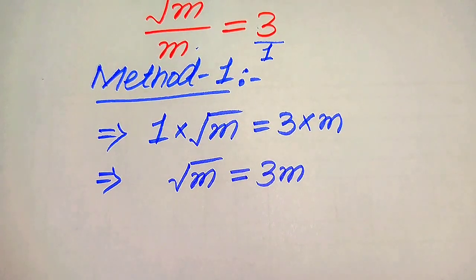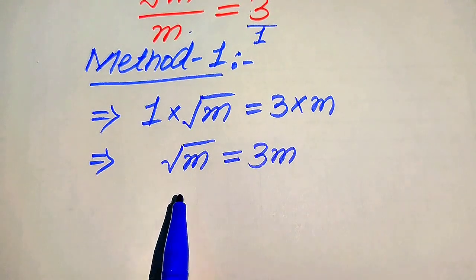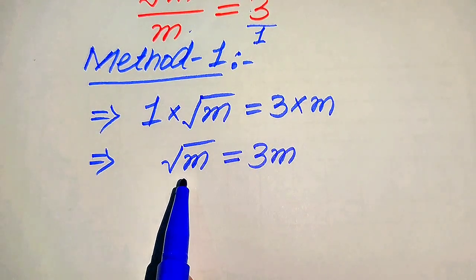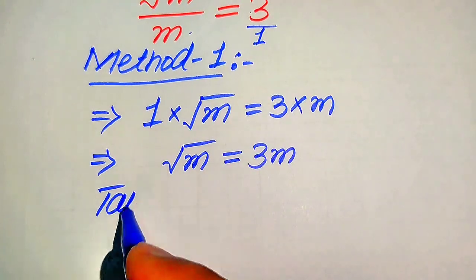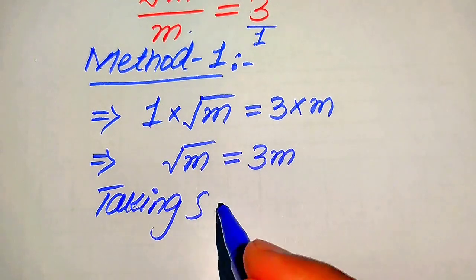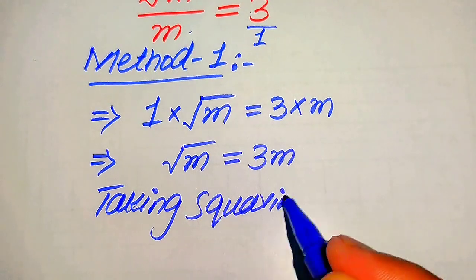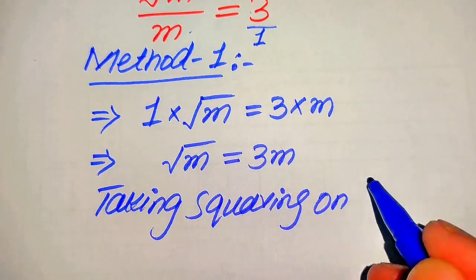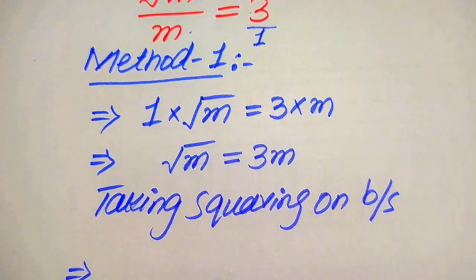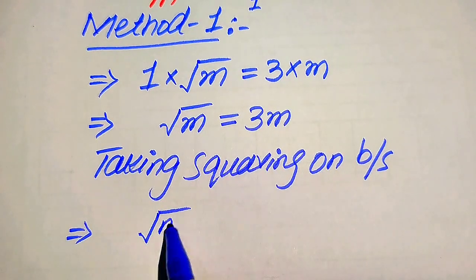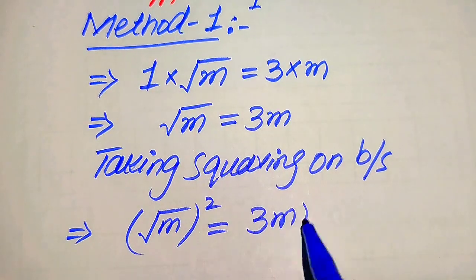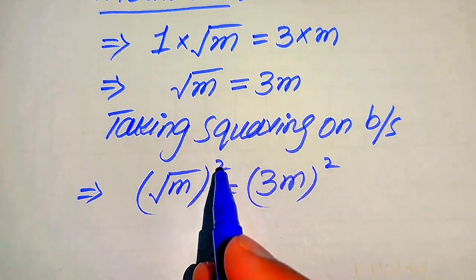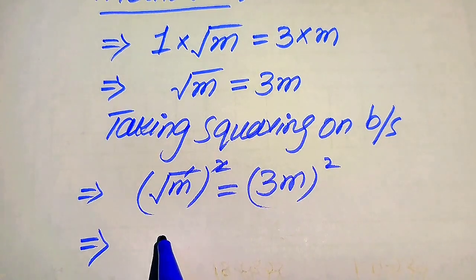After simplification, we get square root of m equals 3 times m. Because we are solving for the values of m, we need to eliminate this square root sign from the left hand side. To do this, we square both sides. After squaring, the square root of m whole squared equals 3m whole squared.